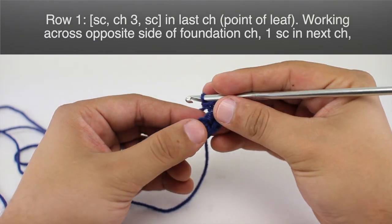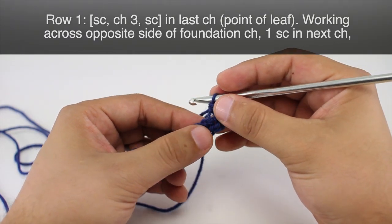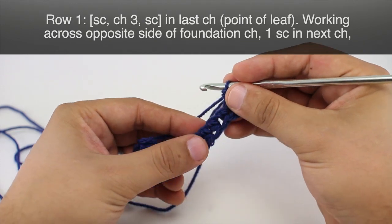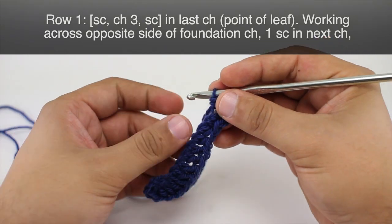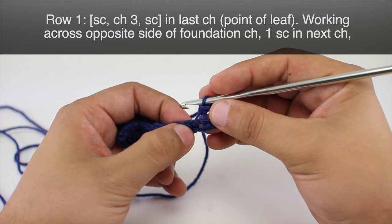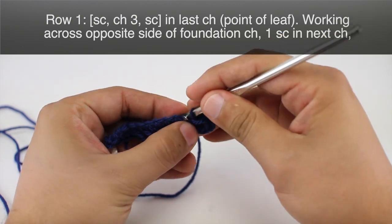So we've kind of wrapped around now. So now we're going to work across the opposite side of our foundation chain and we're going to do the reverse of what we did. So we'll start with a single crochet.